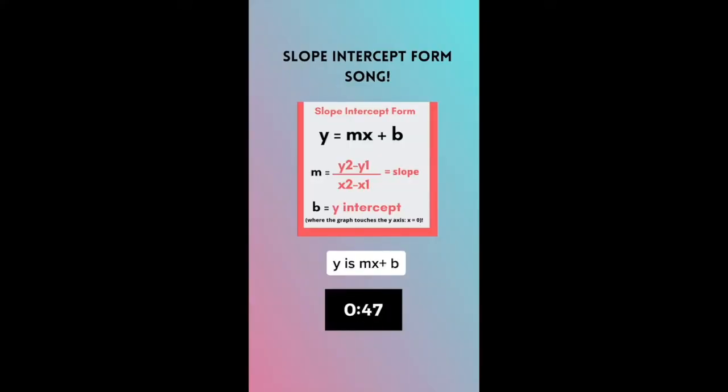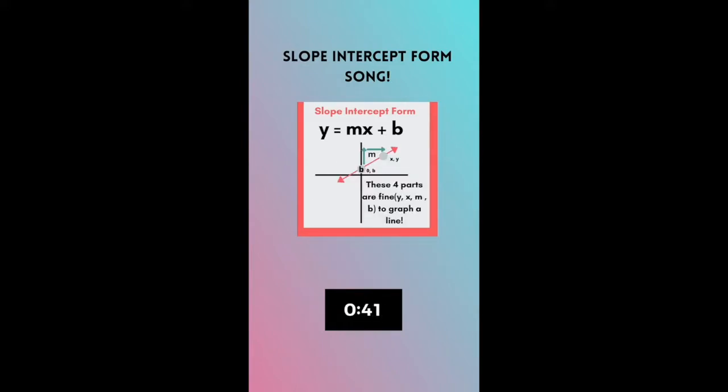Y is mx plus b, y is mx plus b. M is the slope of the line, while b is the y-intercept. Y is mx plus b, y is mx plus b, these four parts are fine to graph a line.